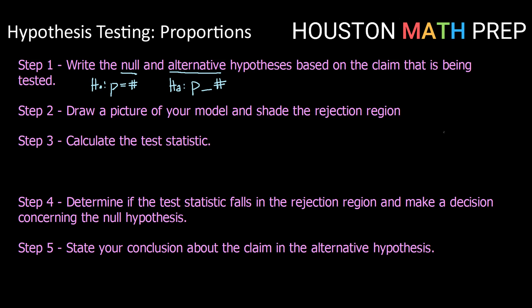We can then draw a picture of our model and shade our rejection region. We're back to using our Z or standard normal distribution. And depending on what our alternative hypothesis looks like, we can have a one-sided left test, a one-sided right test, or a two-sided test.